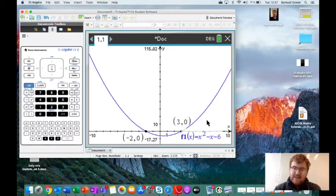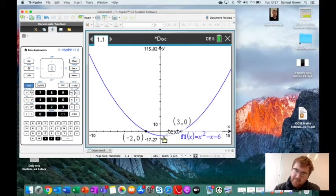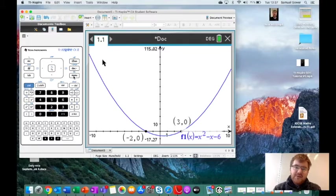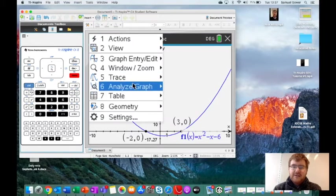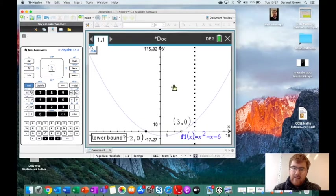These are the two roots. Our next activity is to work out the minimum point. Notice it goes all the way down, there's a minimum down here, a very smallest point, and then goes upwards. We do the same process: go to Menu, Analyze Graph, Minimum.